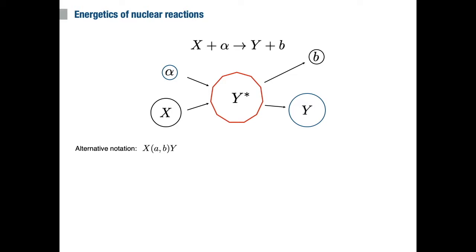A very common notation for this reaction, X and α goes to Y and b, is this one here in which the heavier or target nucleus X is outside the parenthesis on the left, and then inside the bracket we have the small particle α that hits the nucleus X on the left and the small particle that is emitted when the reaction takes place on the right.